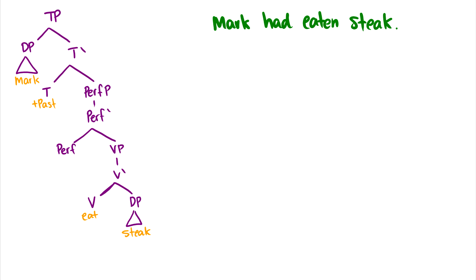So, here I have the sentence, Mark had eaten steak. So, I filled in the stuff that we already know. So, Mark is the subject of the sentence. Steak is the object. Eat is the verb. So, the question is, well, the perfect carries some morphology on it and it also carries the word have.